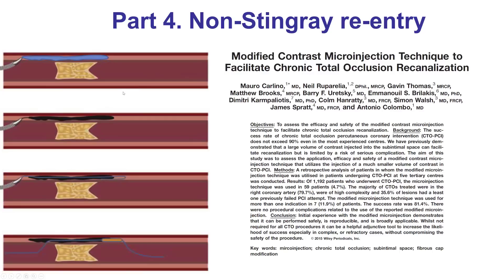Reentry can be done without using the Stingray. This is an example of the Carlino technique, in which the microcatheter is advanced in the sub-intimal space. Then a small amount of contrast — half to one cc — is injected that dissects the sub-intimal space. A wire is then advanced into the space created by the contrast injection, followed by reentry into the distal true lumen, usually using the Stingray balloon. This is the modified microinjection technique, or the Carlino technique.